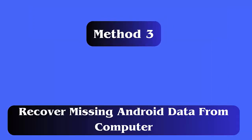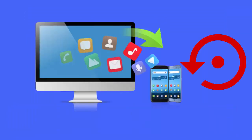Method 3: Recover missing Android data from computer. Before your phone is dead, if you have transferred your important files to your PC from the phone, then you can easily restore them. Check your computer and transfer all the data to another device.